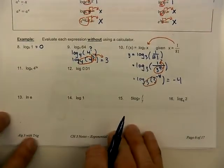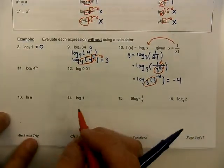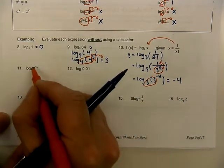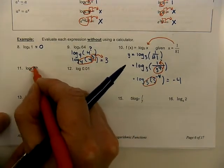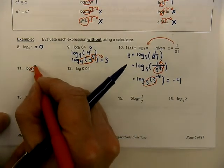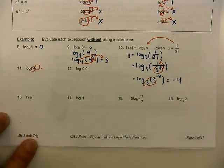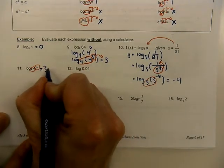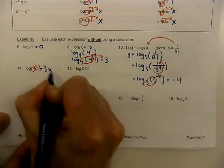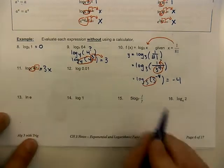Here's number 11: log base 4 of 4 to the power of 3x. Hey, those 4s already match — excellent! So we just look right here — that's our answer. The answer is 3x. We're not solving for x; we're just writing down whatever we see in that exponent position.